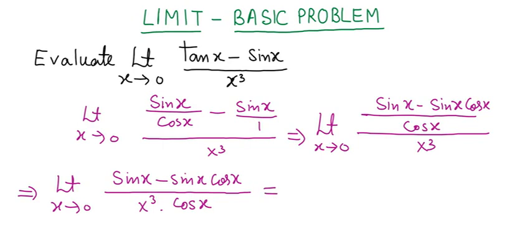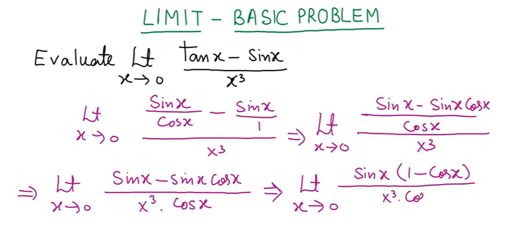This expression may be further simplified this way. Limit x tends to 0: in the numerator, sin x is common to both terms, so you will have sin x times (1 minus cos x). In the denominator, we have x cube times cos x.